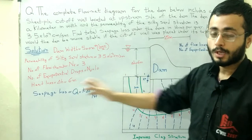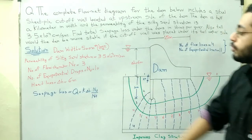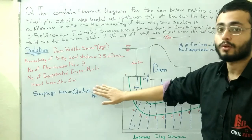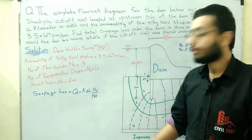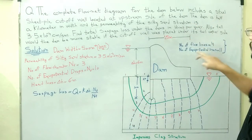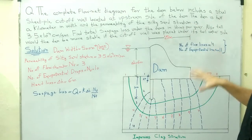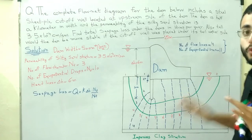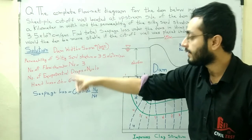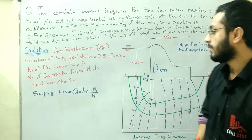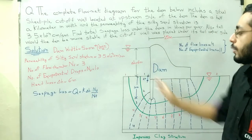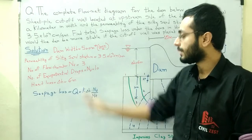You must be clear that Nf is the number of flow channels and Nd is the number of equipotential drops — not the number of flow lines or equipotential lines. So we use Nf = 3 and Nd = 10. The head loss Δh = 6 meters, as shown in the diagram, representing the difference in head between the upstream and downstream sides.